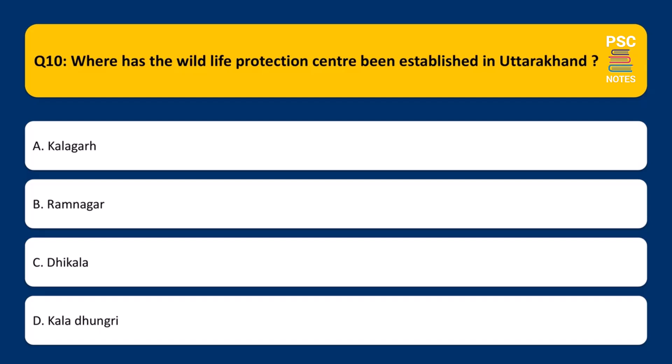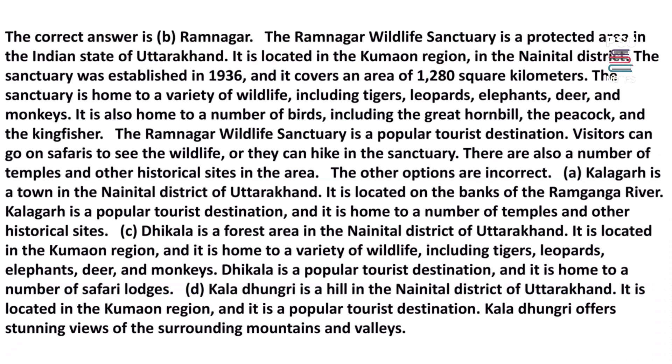Where has the Wildlife Protection Center been established in Uttarakhand? A. Kalagar. B. Ramnagar. C. Dhikala. D. Kaladumri. The correct answer is B. Ramnagar. The Ramnagar Wildlife Sanctuary is a protected area located in the Kumaon region of Uttarakhand, in the Nainital district. The sanctuary was established in 1936 and covers an area of 1,280 square kilometers. It is home to tigers, leopards, elephants, deer, monkeys, and birds including the great hornbill, peacock, and kingfisher.